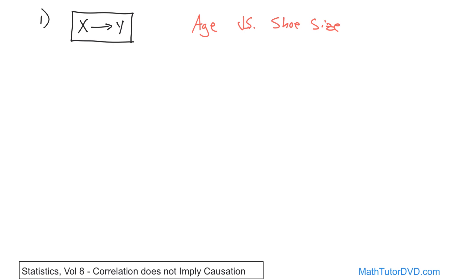Mostly it's just because as humans get older, their bodies get bigger, and then they need bigger shoes. But this is what you've got to be careful of, because a lot of times you'll draw this conclusion when you shouldn't. Even in this case, I would never say age causes shoe size. I would say I believe it's likely that age is a strong influence on shoe size, but there are other factors. Let's look at another case.